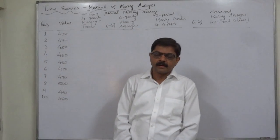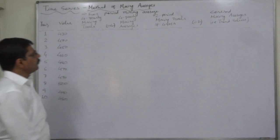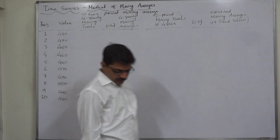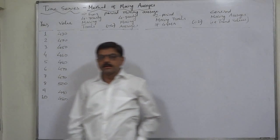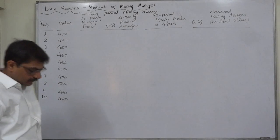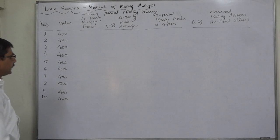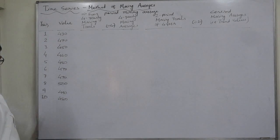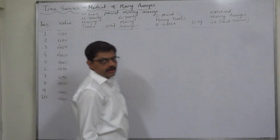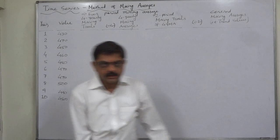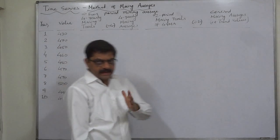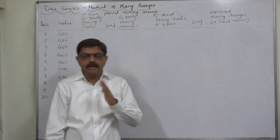Hello and welcome. Namaskar. Time series method of moving averages — now we are going to discuss the even-period moving average: how to find out the moving averages when we need to consider the even period cycle. This is somewhat different from the odd period cycle. This is a time series having 10 years of values and we need to find out the four-yearly moving averages.